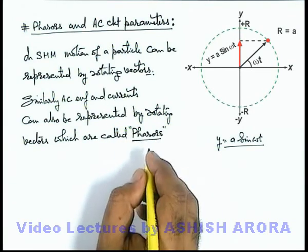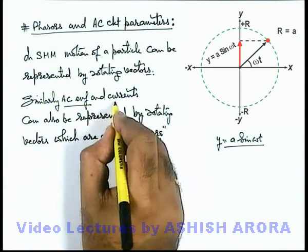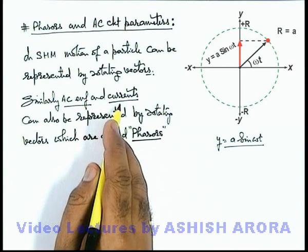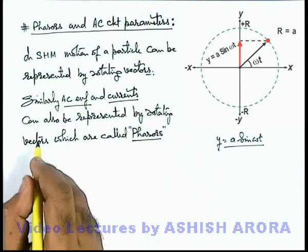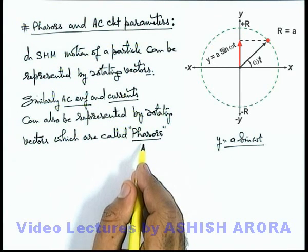Specified name given to these vectors because actually AC potential difference, EMF or currents are scalar quantities, and here we are representing these scalar quantities by some rotating vectors so we won't call it actually vectors, these are termed as phasors.